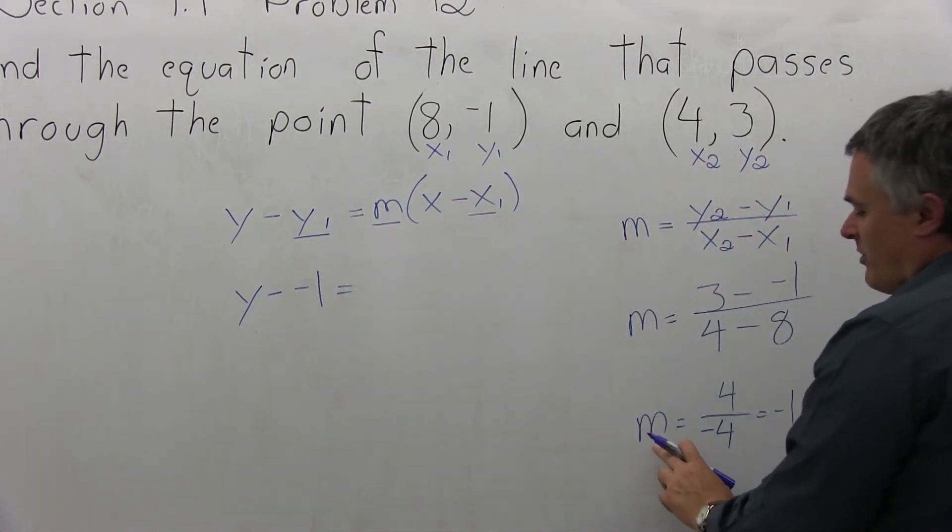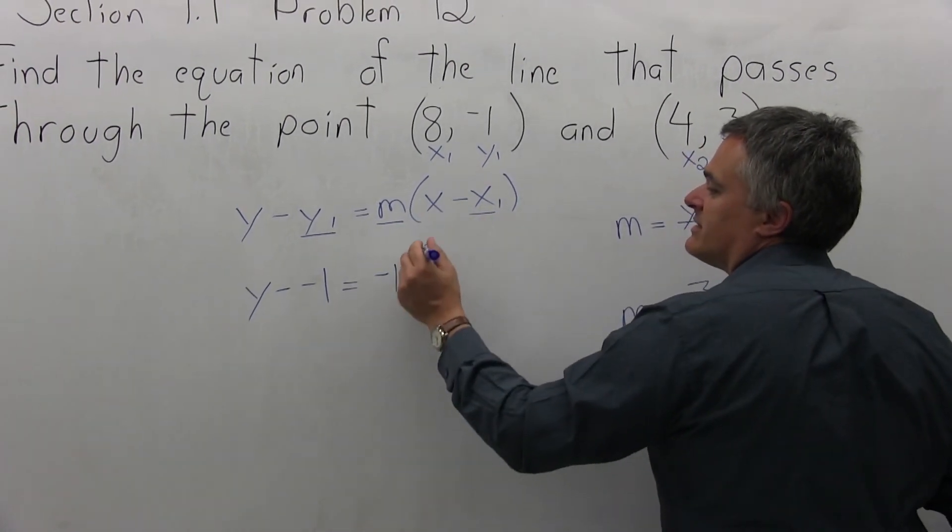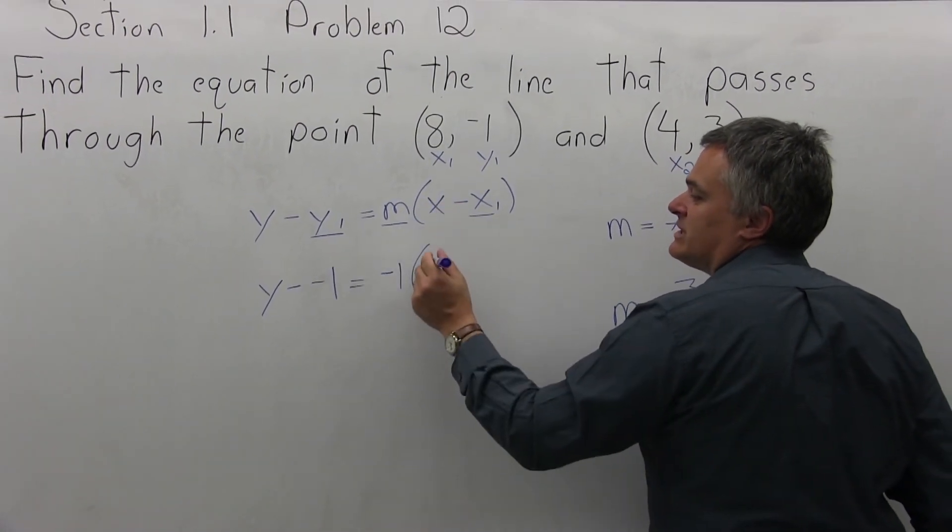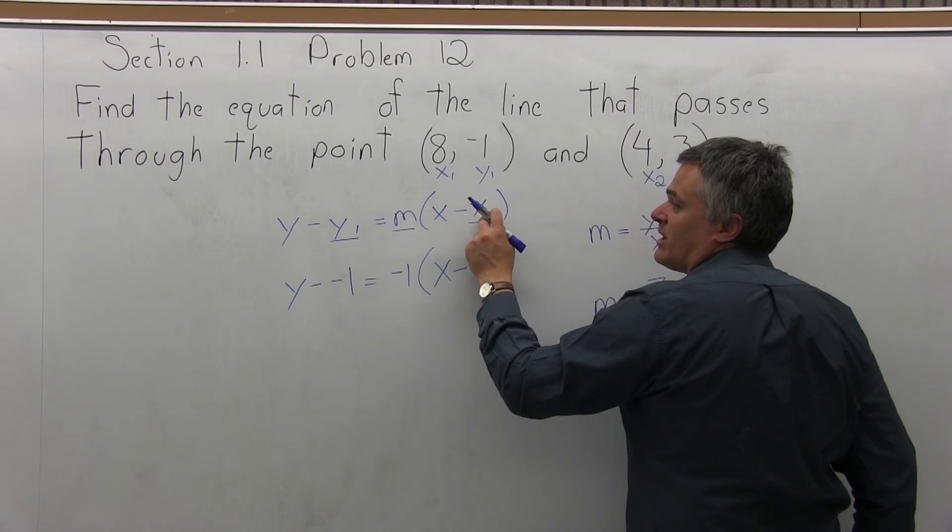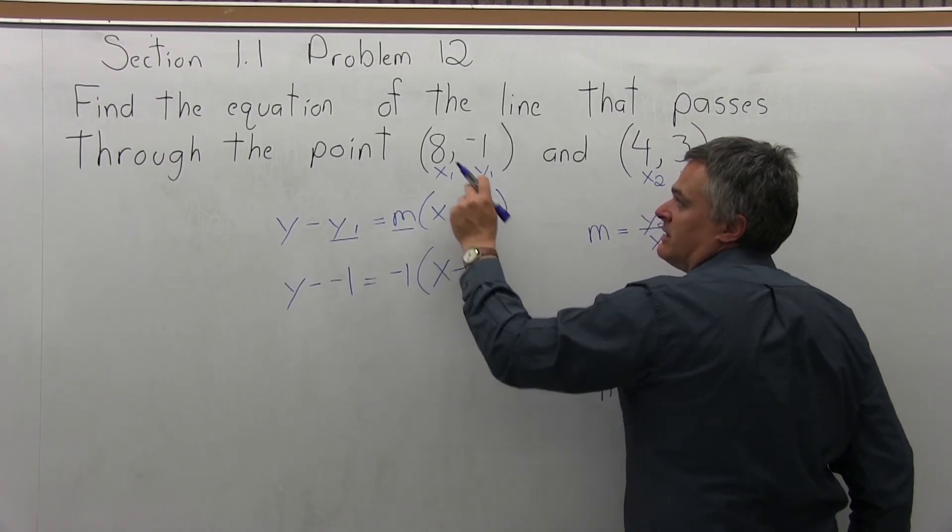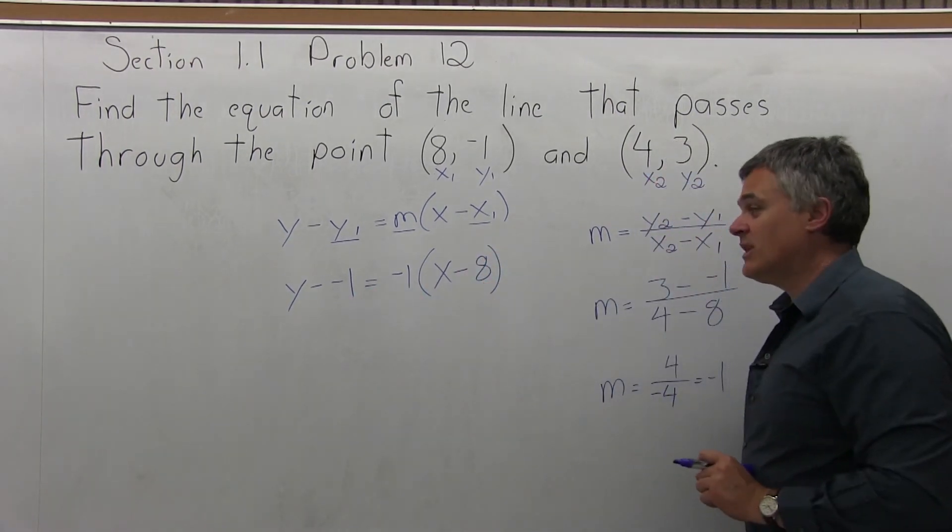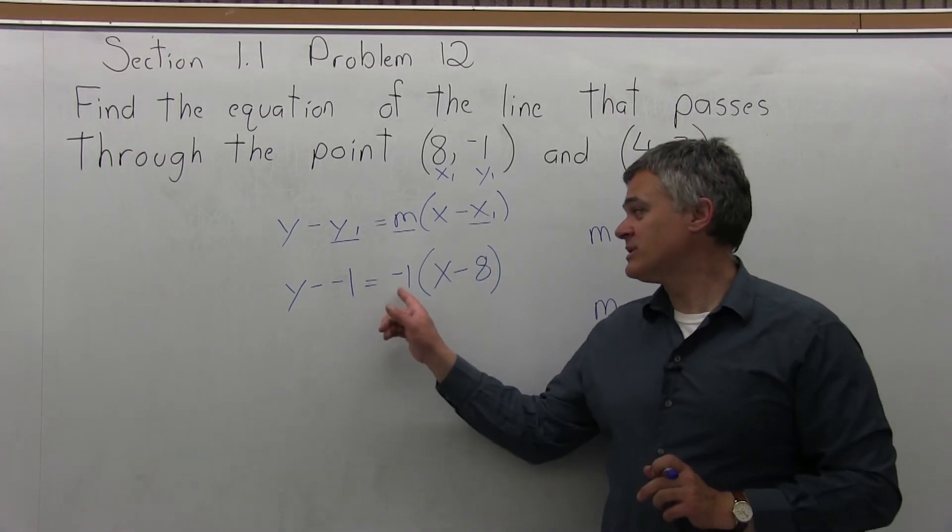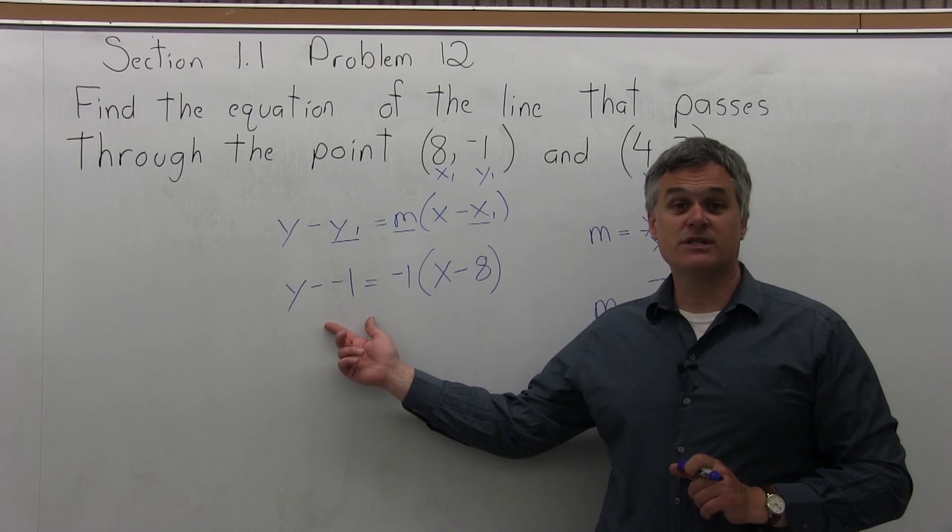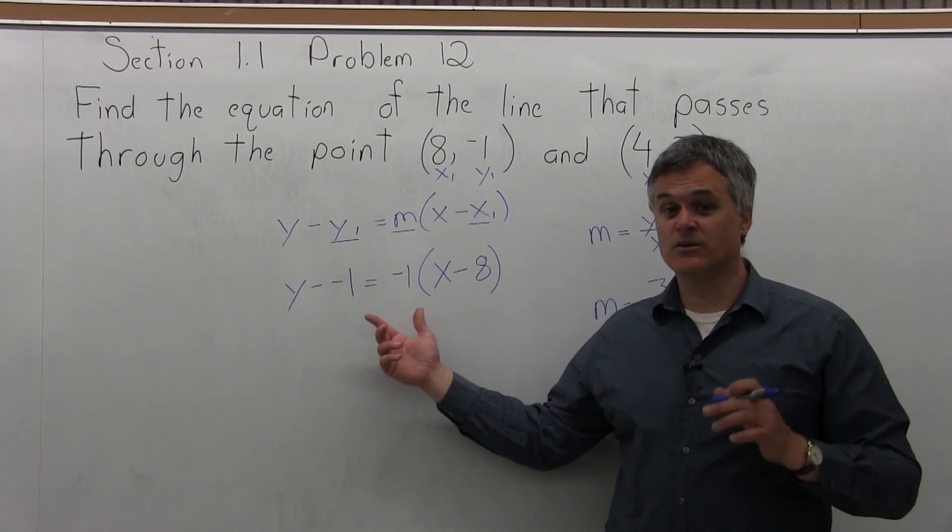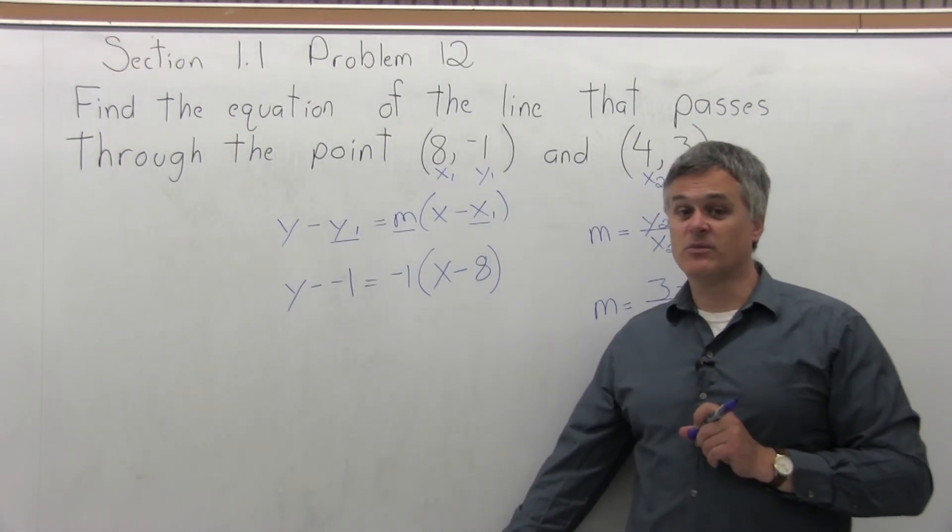Then equals. Now m, from our computation off to the side, we had figured out that m is negative 1. Then I have some parentheses. This x will stay minus x1, I have to put in a number value for. The value of x1 is 8. Now this is the equation of the line: y minus negative 1 equals negative 1 times (x minus 8). But as some of the other problems before this one, this is not in the most reduced form. So it is the correct answer, but we should simplify it a little bit further.